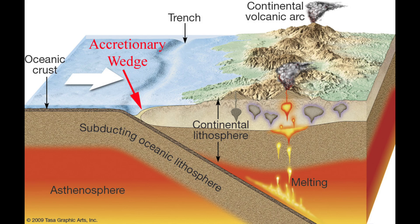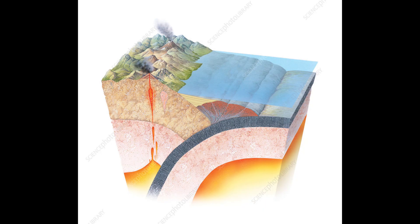Whereas subducting plates with thick sequences of graywacke sediments yield packages — thrust slices of rock from the subducting plate — in the accretionary wedge dominated by graywacke. Prisms of accreted rock at convergent plate boundaries may also grow by a process known as underplating, where packages are added to the base of the accretionary wedge, a process that typically causes folding of the overlying parts of the wedge.